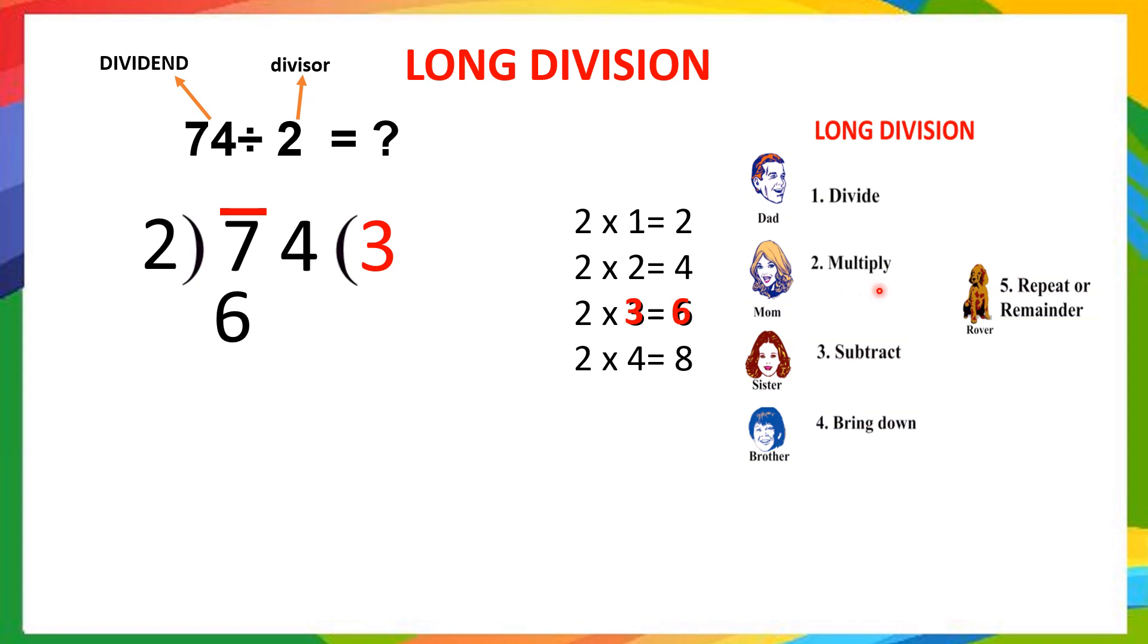Because we are considering for 7 now. Now, next step. Multiplication is over. Third step is what? Subtract. You subtract now. 7 minus 6 is how much? 1. Subtraction step. Next step is what? Bring down. What we should bring down? The number which is there besides. Now, what is that number? 4. So, bring down 4. So, how much it is? 14.